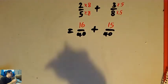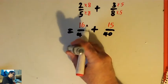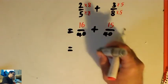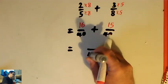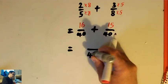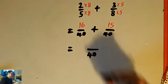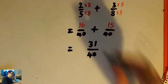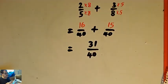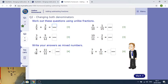Having got everything into fortieths, I can just add up the tops and make a big fraction out of 40. That's 31 out of 40. So let's fill that in: 31 out of 40.